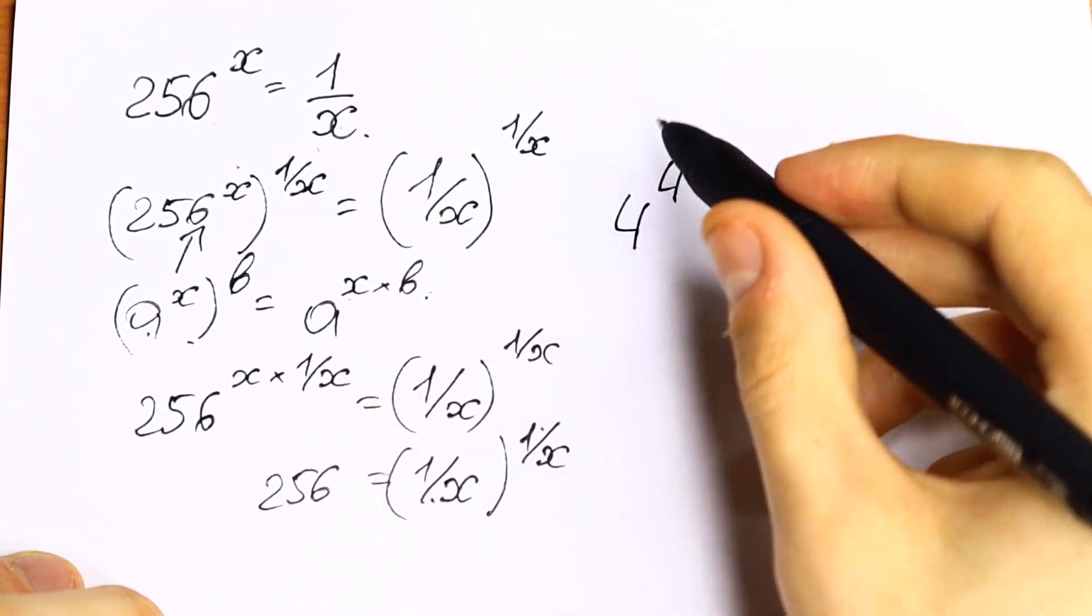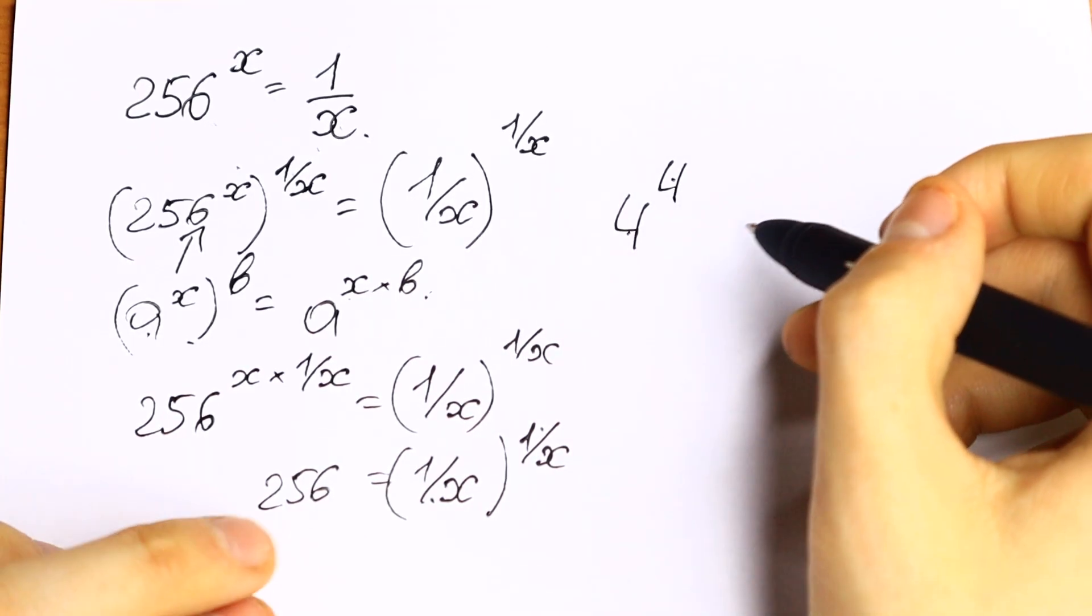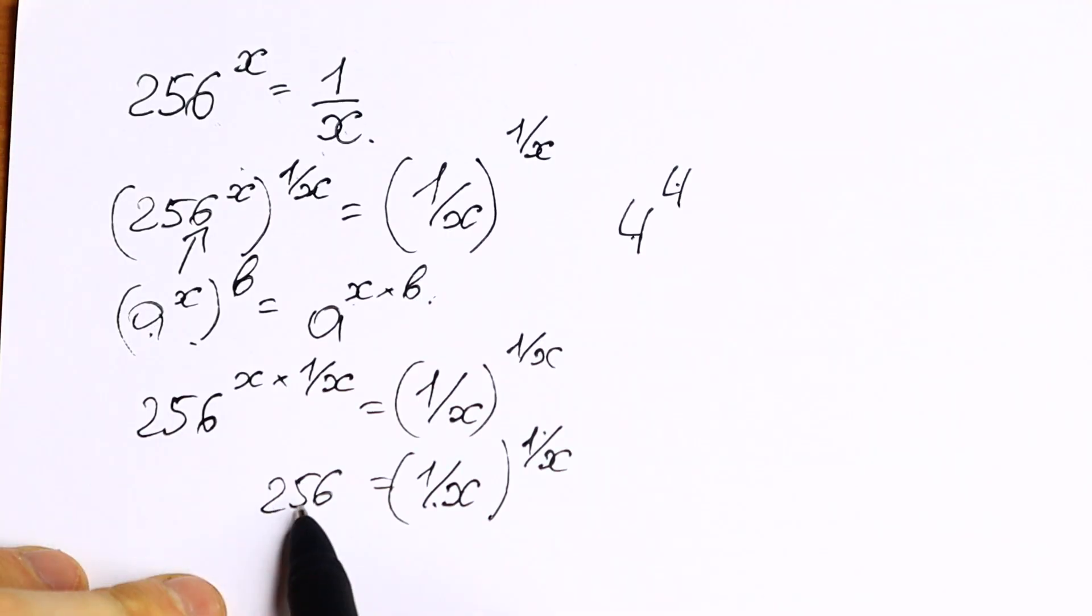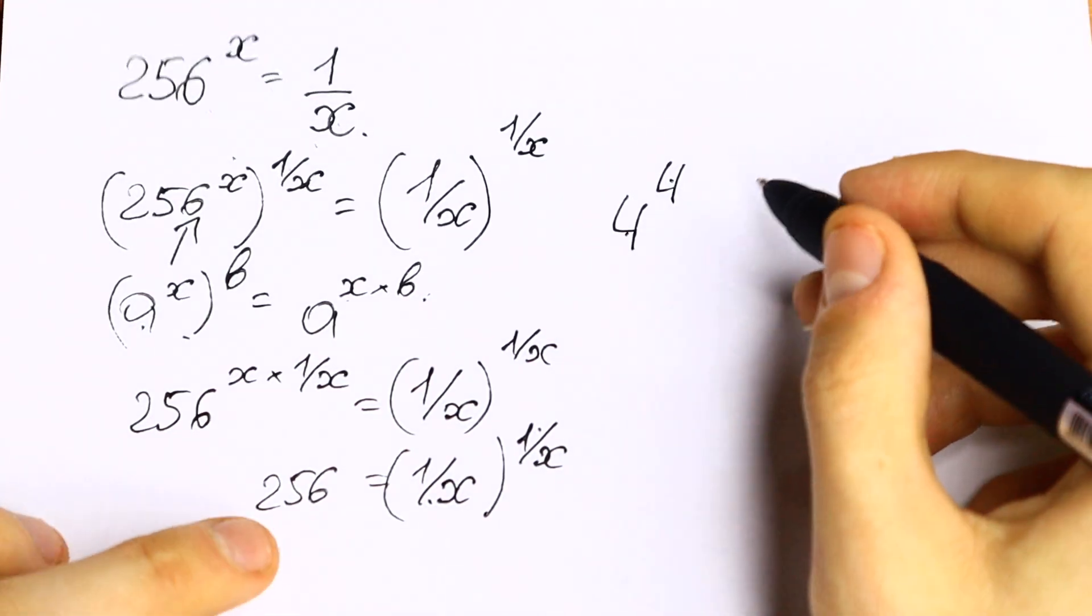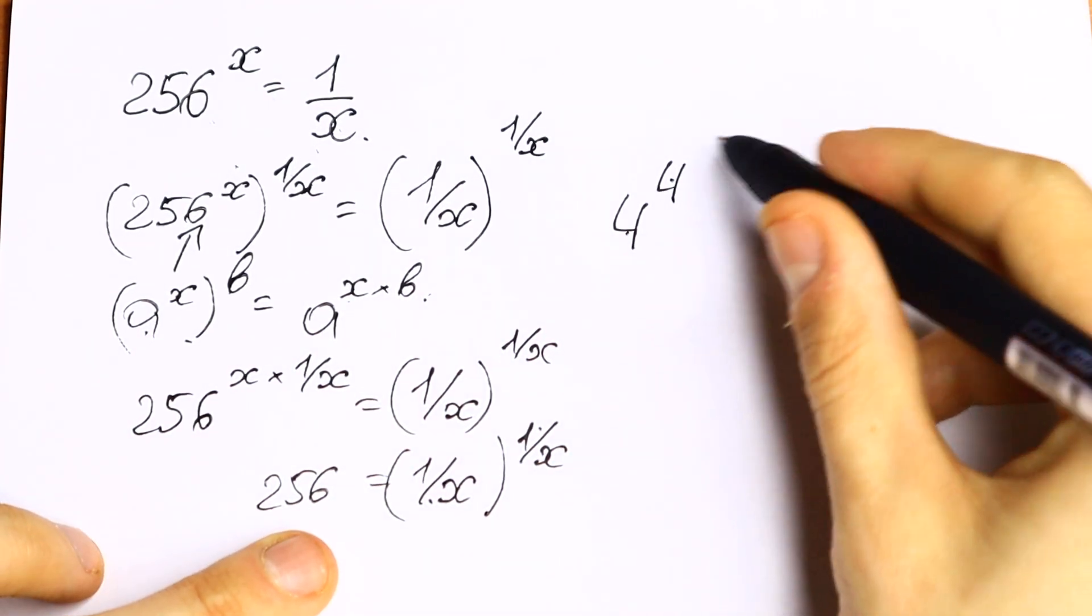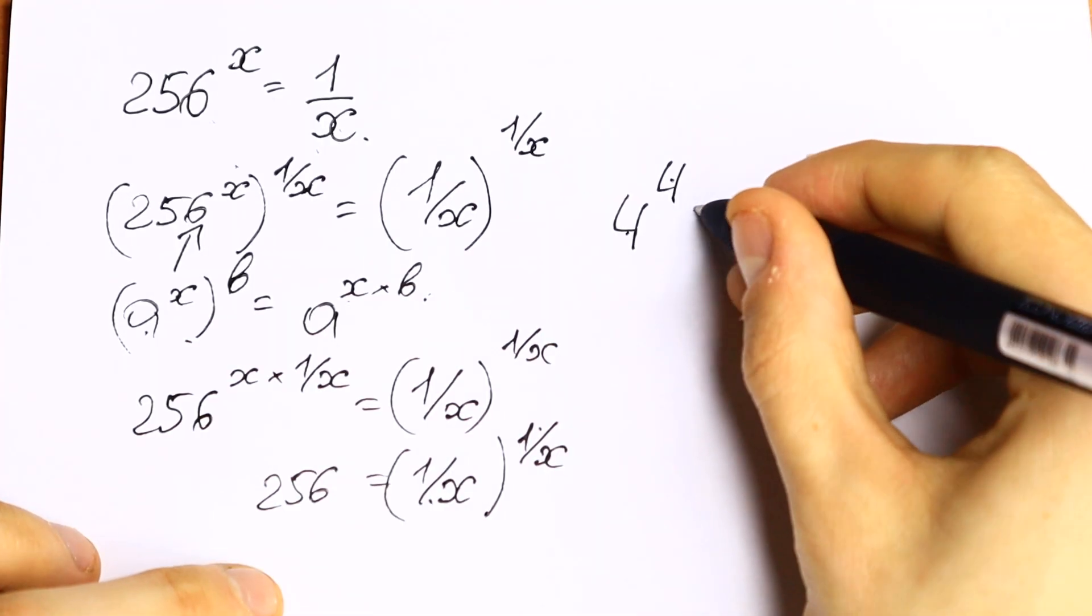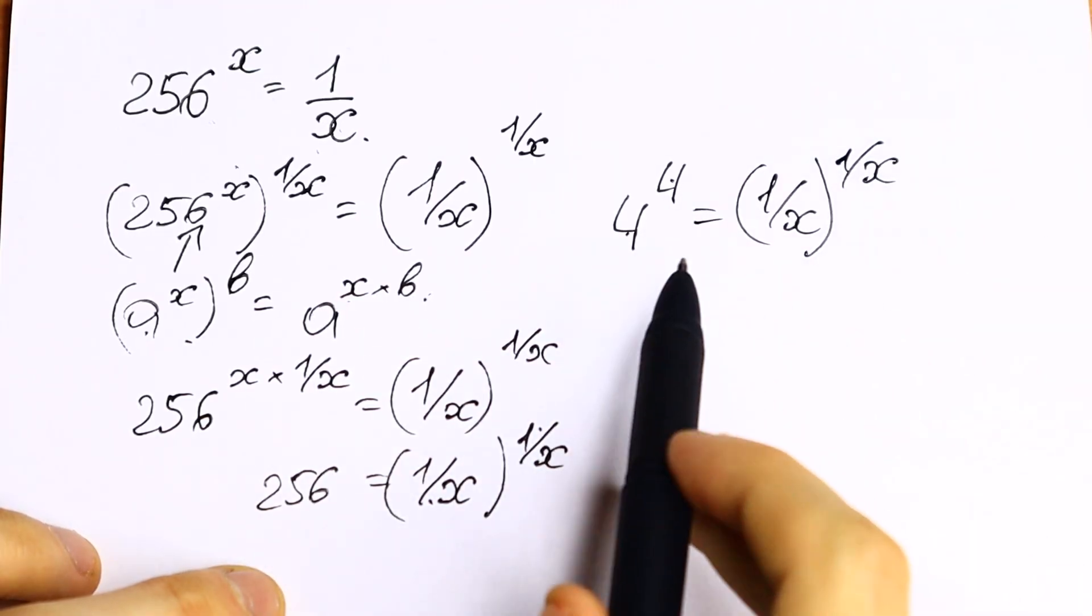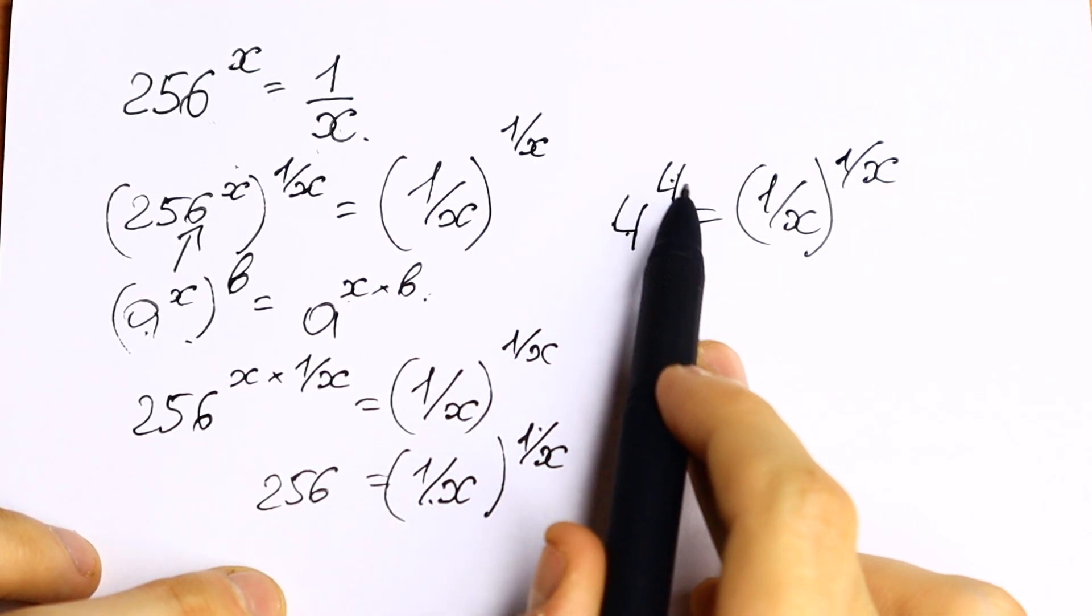Because then we will have same base and same exponent. Of course this case only worked with 256. If you have 255, this case does not work. But in our case 256 can be written as 4 to the fourth power. It will be equal to 1 over x to the power 1 over x. So as you can see, same base, same exponent, same power.